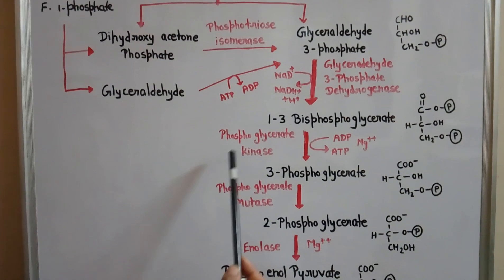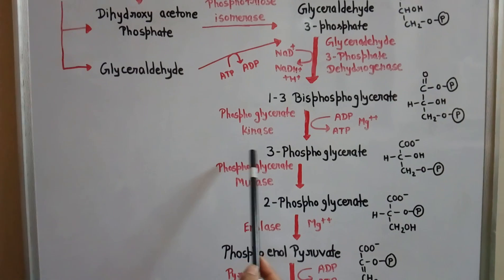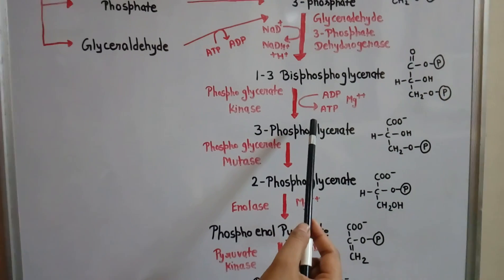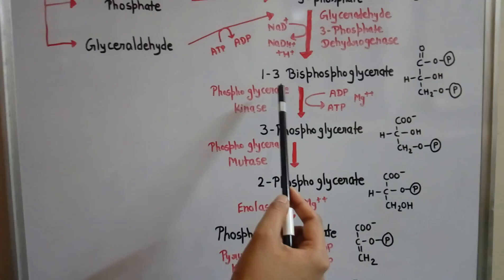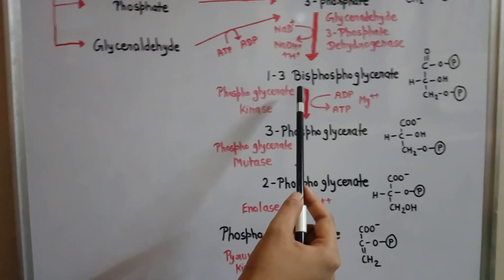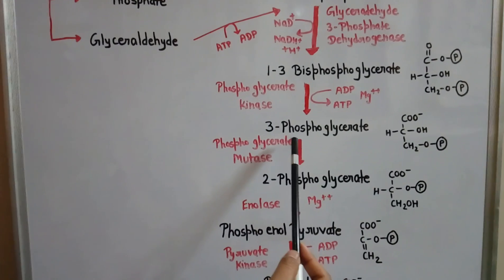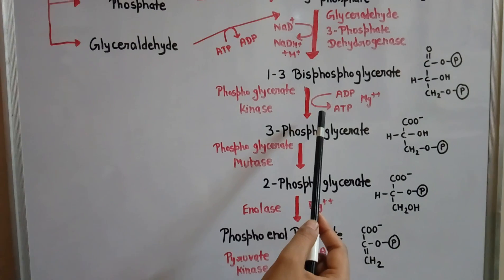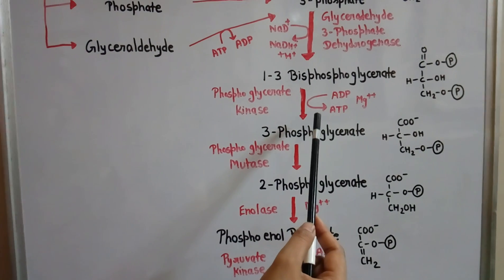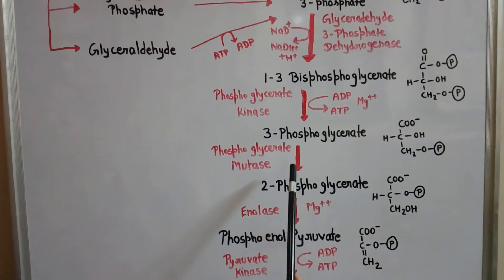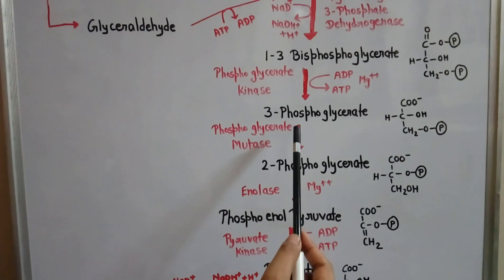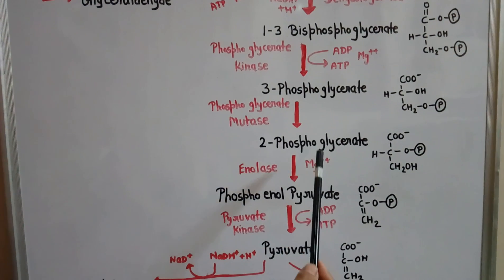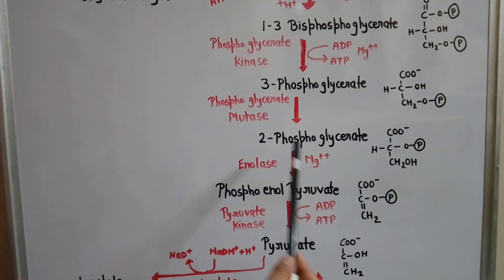1,3-bisphosphoglycerate is converted to 3-phosphoglycerate in the presence of the enzyme phosphoglycerate kinase, where ADP is converted to ATP. Two molecules of 1,3-bisphosphoglycerate are converted to 3-phosphoglycerate, so two molecules of ATP are synthesized.